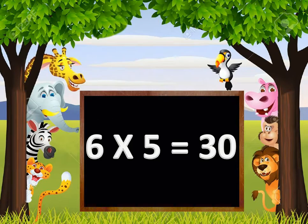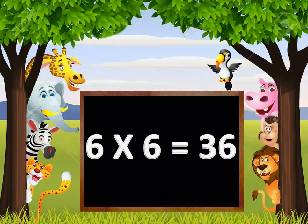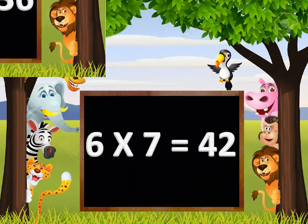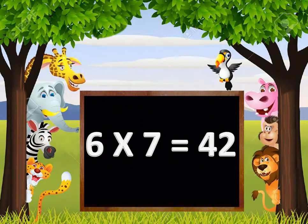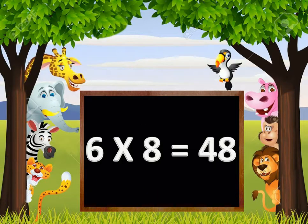6 times 5 is 30, 6 times 6 is 36, 6 times 7 is 42, 6 times 8 is 48.